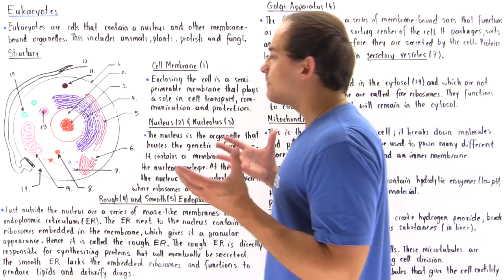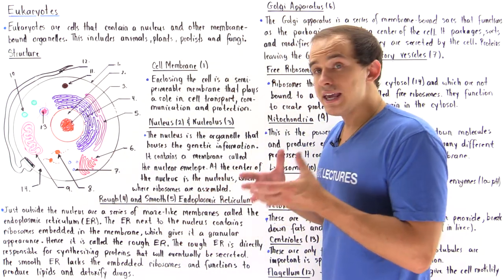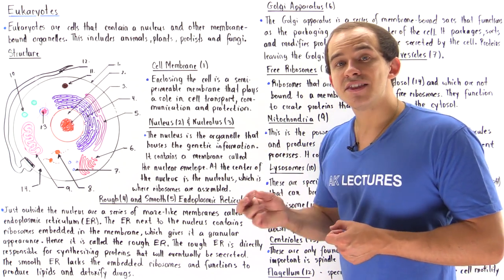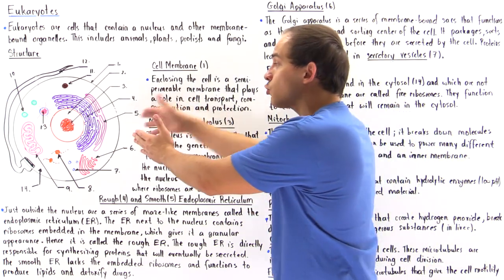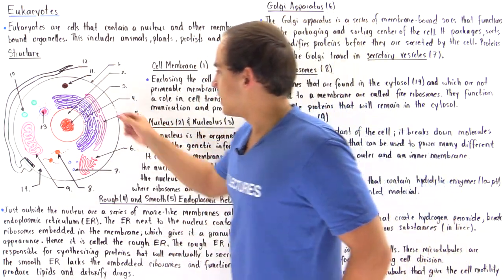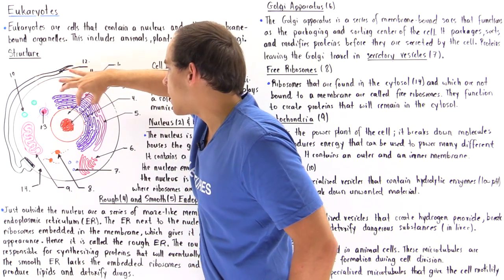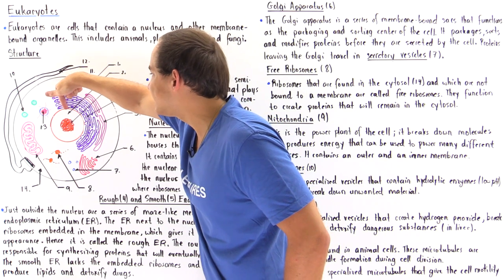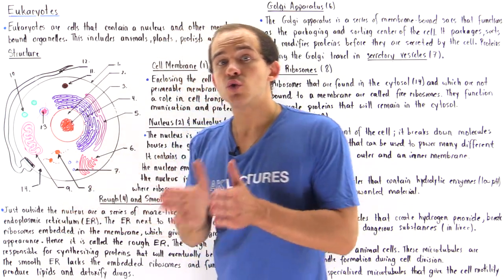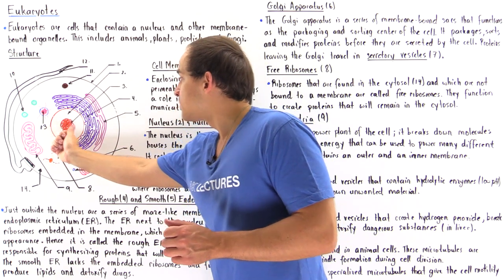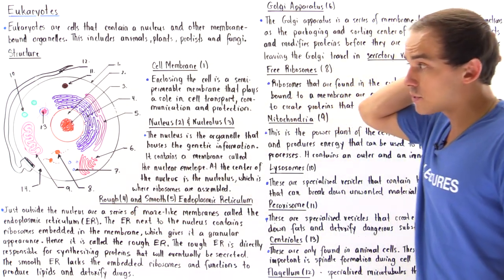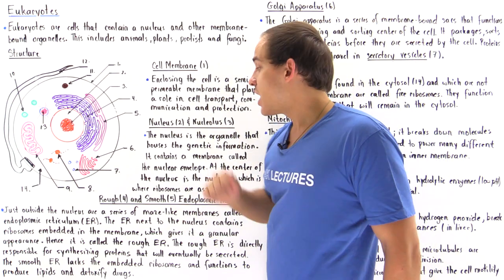The rough endoplasmic reticulum functions to synthesize proteins — specifically proteins that end up either being secreted from the cell or incorporated into the cell membrane. The nuclear envelope and the membrane of the ER are connected, which is why once the nucleolus synthesizes incomplete ribosomes, those ribosomes can be placed inside the ER, embedded in its membrane, and then synthesize our proteins.